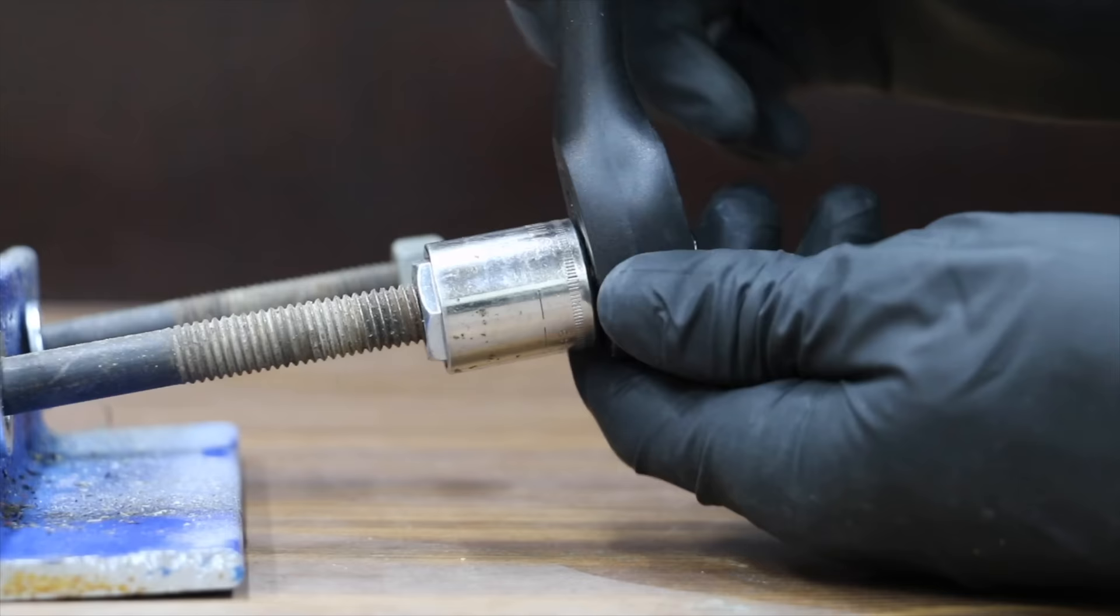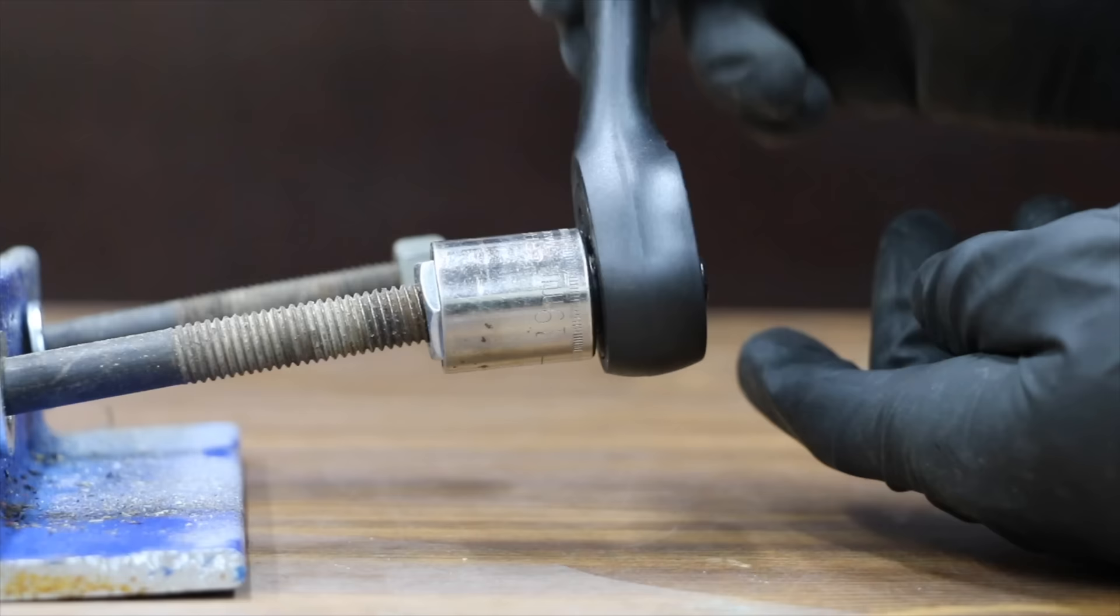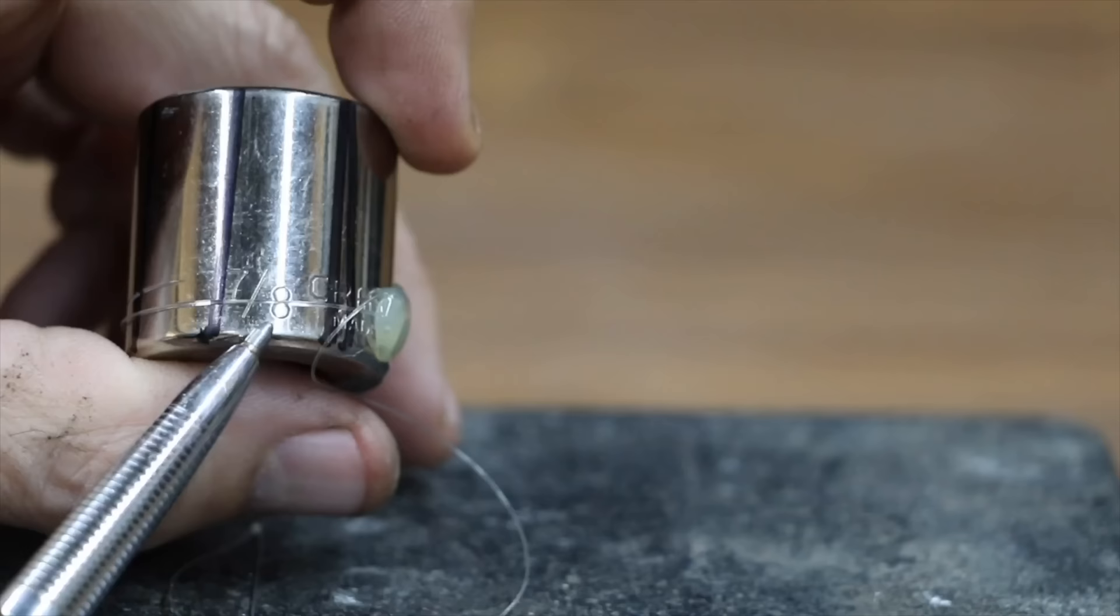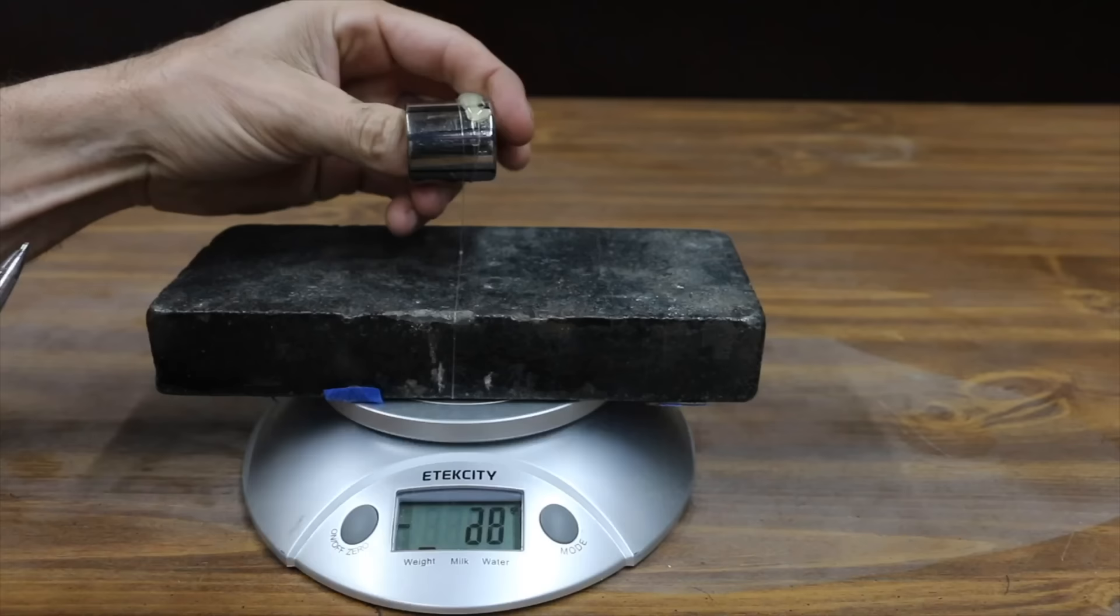A ratchet with a lot of back drag really makes removing and installing fasteners in tight spaces a challenge at times. If there's enough space, adding resistance to the socket using finger pressure allows the ratchet to make progress but that's not always an option. For this test, I used a 7/8 inch socket, fishing line, and a scale to measure the back drag.